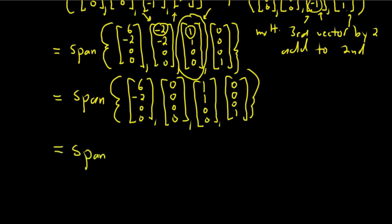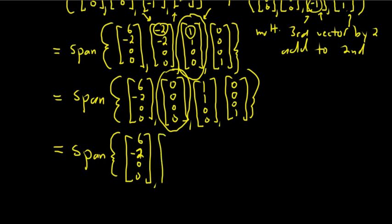This is the way pros do it. So now you have the 0 vector. You can always drop the 0 vector. It's always what's called a redundant vector. It's always a linear combination of the others. So you can just drop the 0 vector. So we have [6, -2, 0, 0], then here we have [1, 1, 0, 0], and then here we have [0, 0, 0, 1].